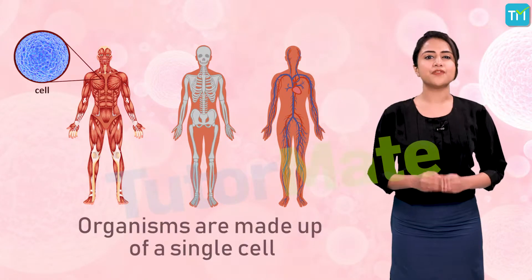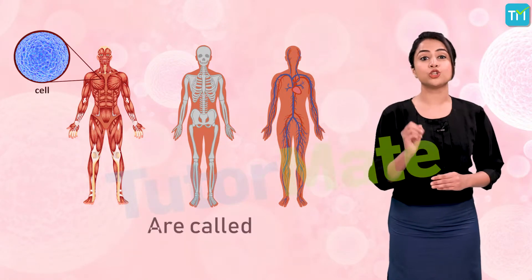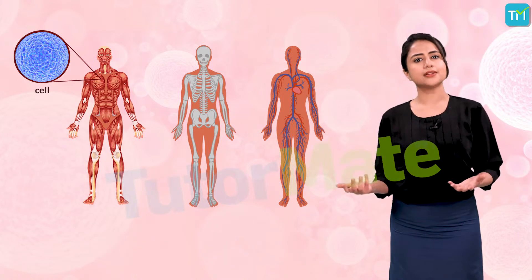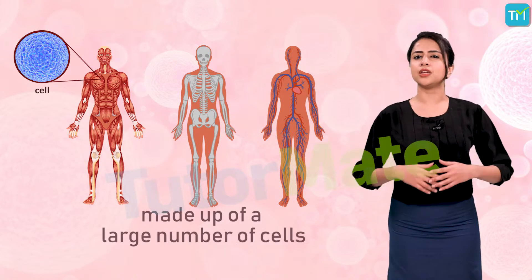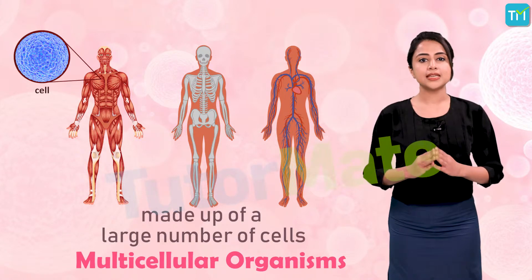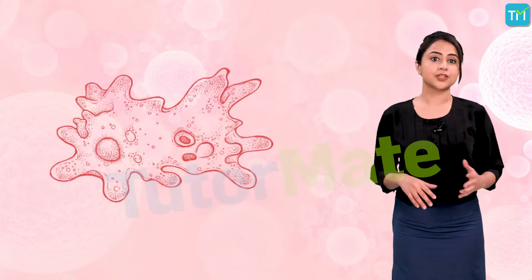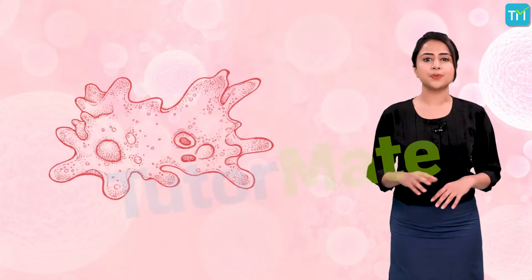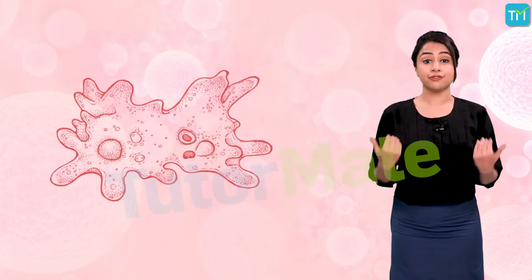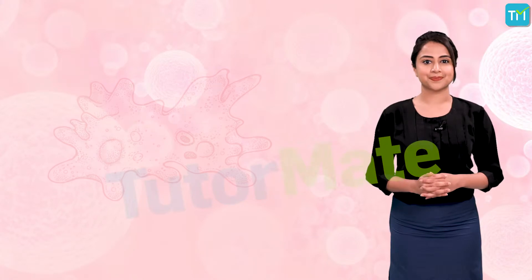Some organisms are made up of a single cell and are called unicellular organisms, while many others are made up of a large number of cells and are called multicellular organisms. Amoeba and certain bacteria are examples of unicellular organisms. We humans are multicellular organisms.